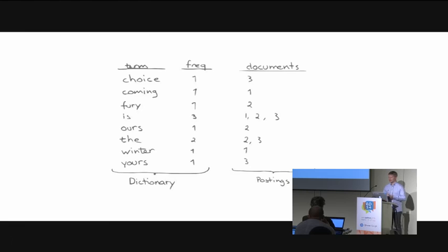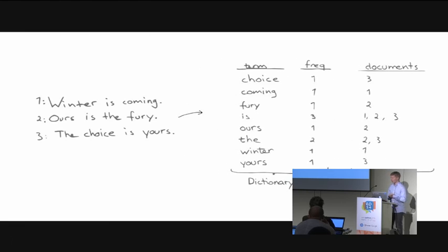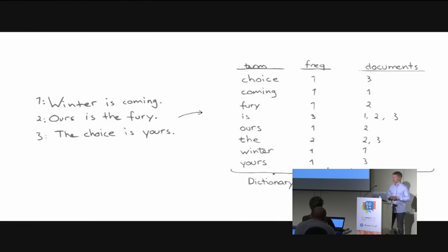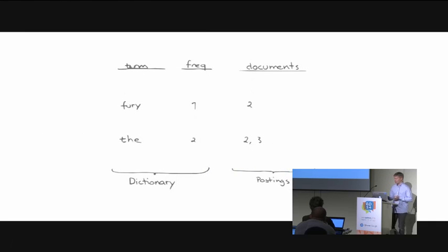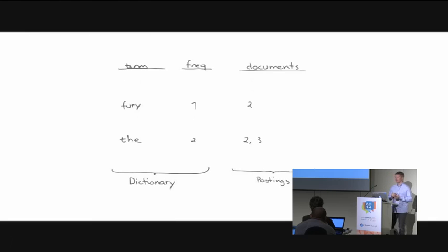When you do a search, you first operate on the sorted dictionary and then process the postings. If you have a simple document, you can index it by first lowercasing the text, removing punctuation, and tokenizing on whitespace. When you want to search for a term, you first find the terms in the dictionary and then intersect or union the postings depending on the kind of search you want. The principle is the same for all searches: first operate on the dictionary to find candidate terms, then operate on the postings.